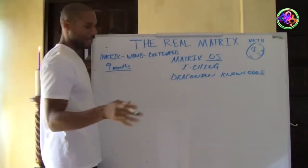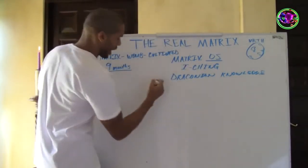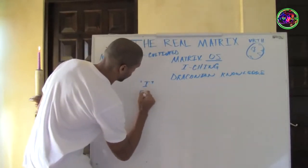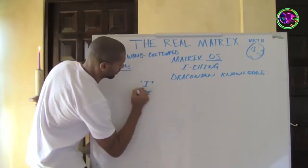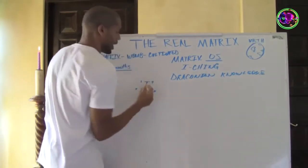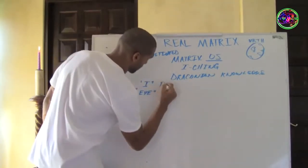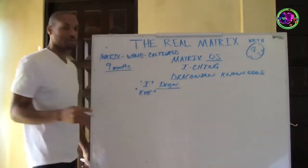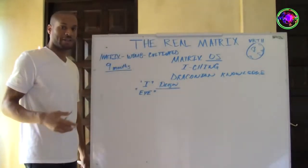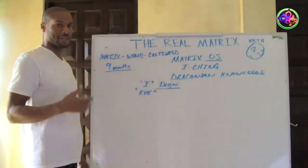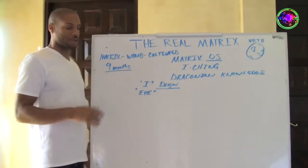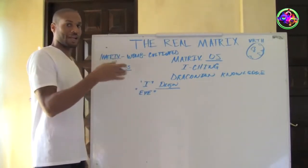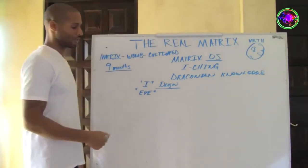In China, 'I' — which we also spell this way — means dragon. Because the Chinese language, Mandarin, is much more antique than the English language, right off the bat you've got to understand that this 'I' means what it means in Chinese before it means what it means in English.